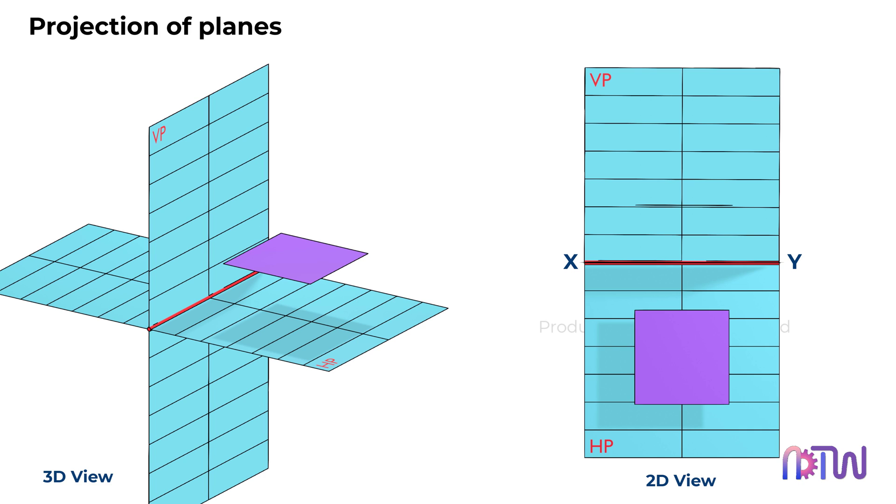Let's explore the various orientations of a simple square plane and how these orientations are represented in engineering drawings. A square plane can be positioned in several ways. It can rest parallel to the horizontal plane or be inclined to it.